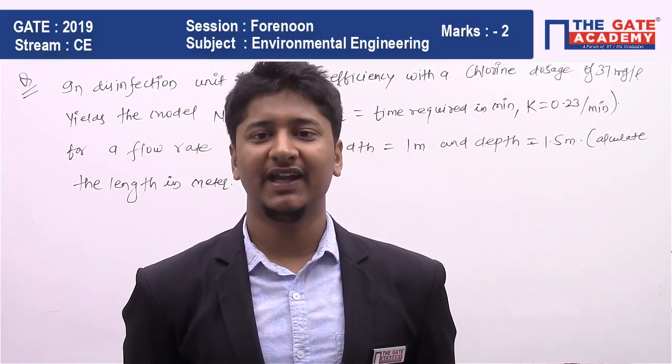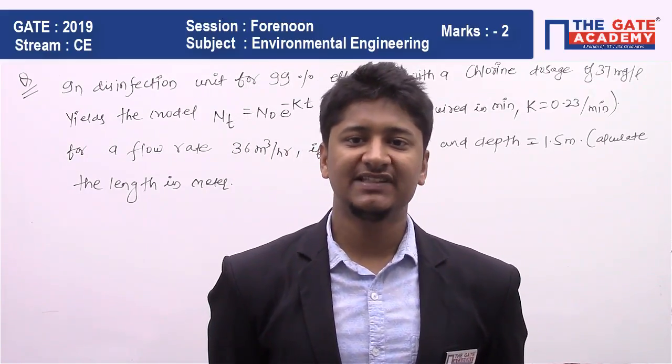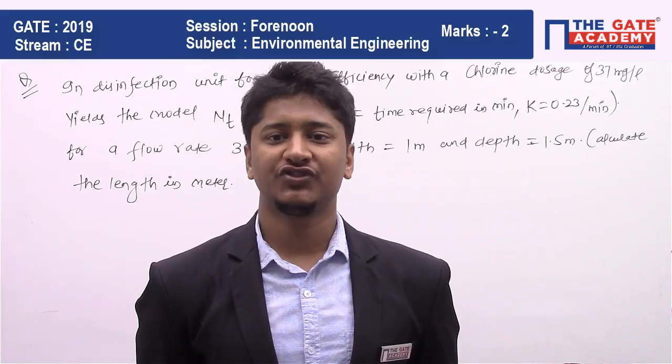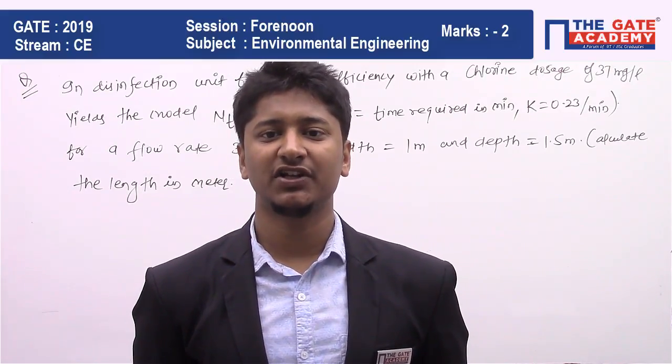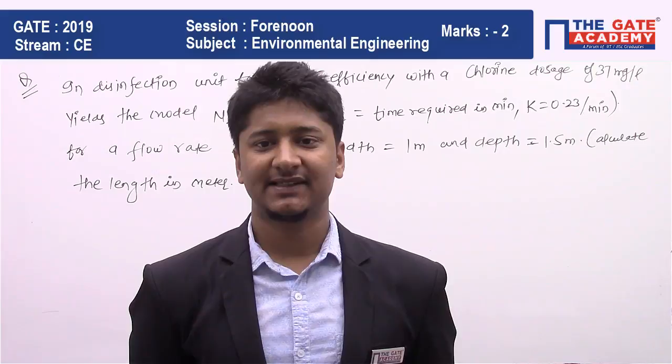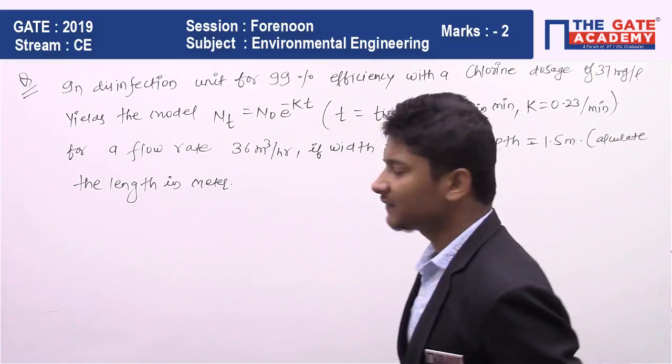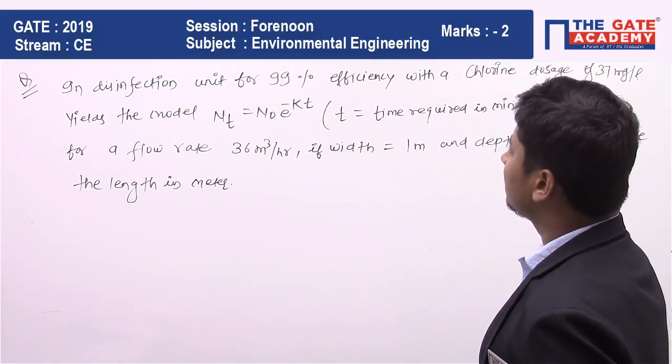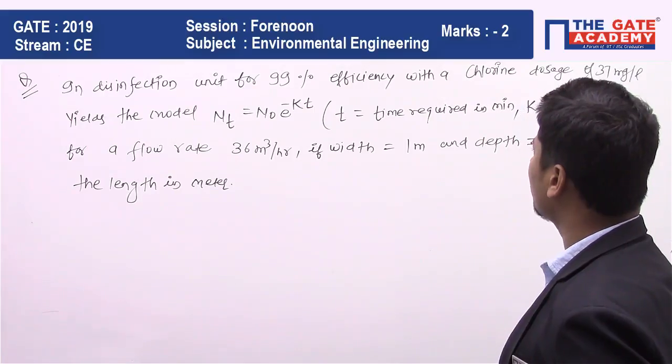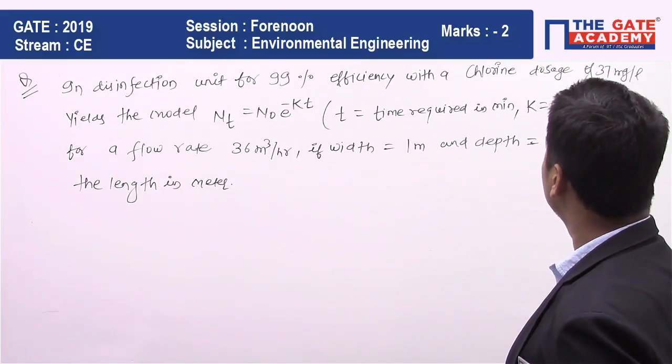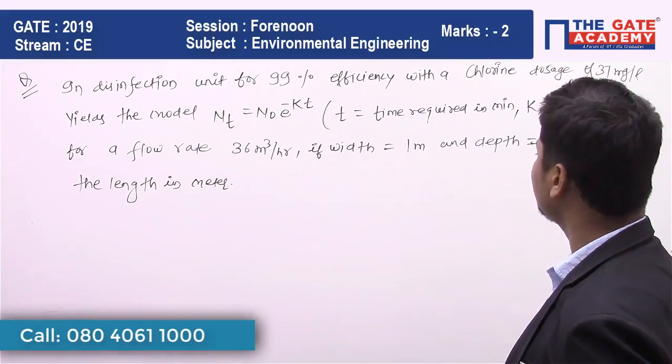Hello students, I am Raghunsarabh, and in this video we are going to solve a GATE question from Civil Engineering branch which came in the forenoon session. This question is related to chemical kinetics from environmental subjects. I am reading this question: In a disinfection unit for 99% efficiency with a chlorine dose of 37 milligrams per liter yields the model NT equal to N₀ e to power minus KT, where T is time required in minutes.